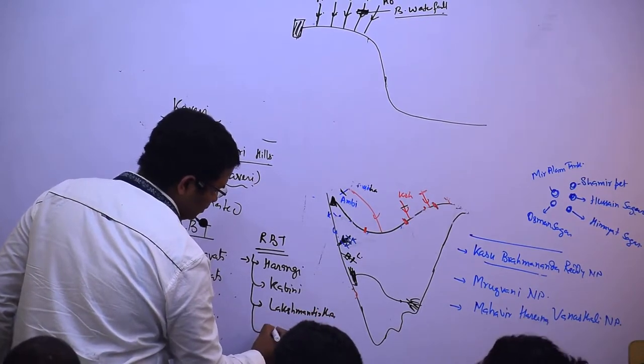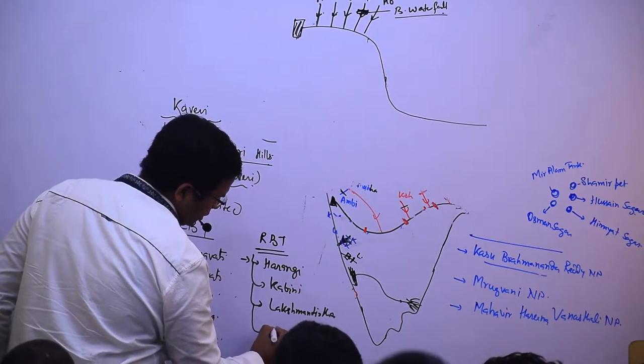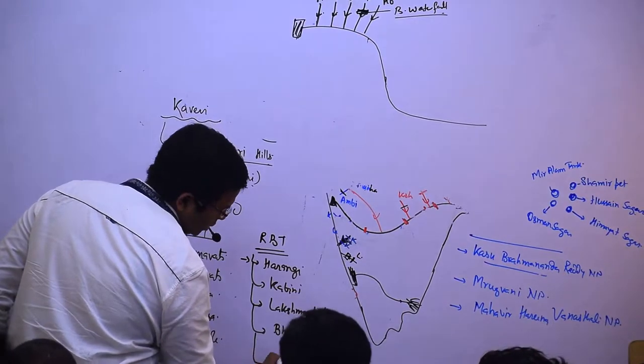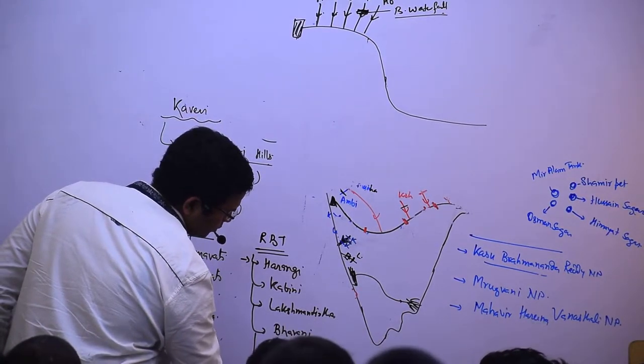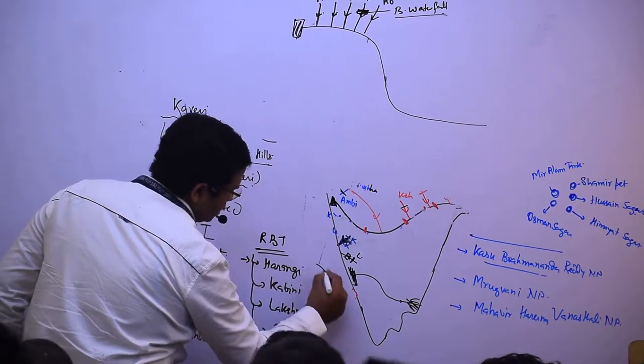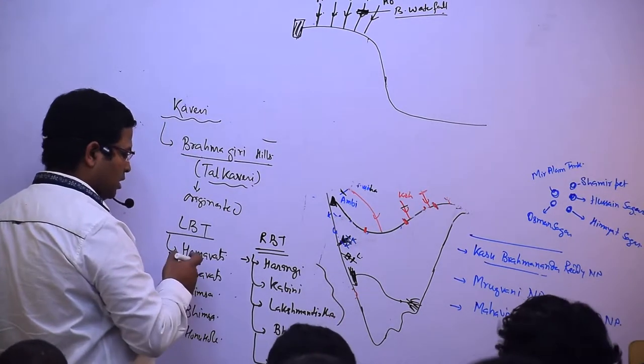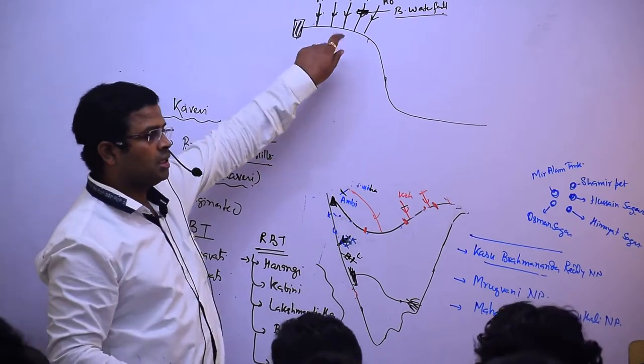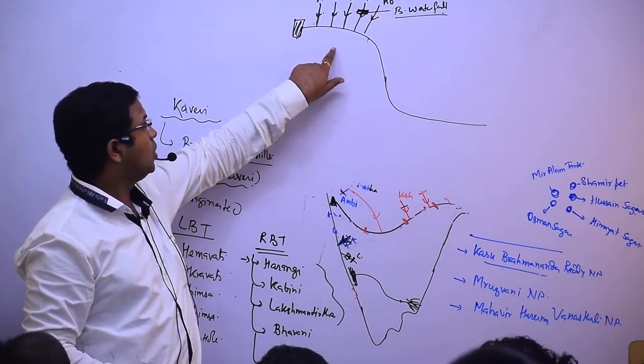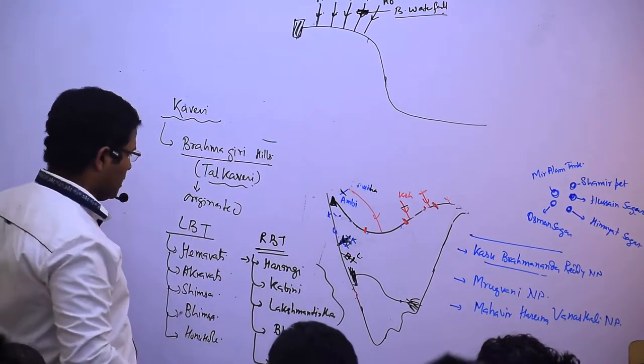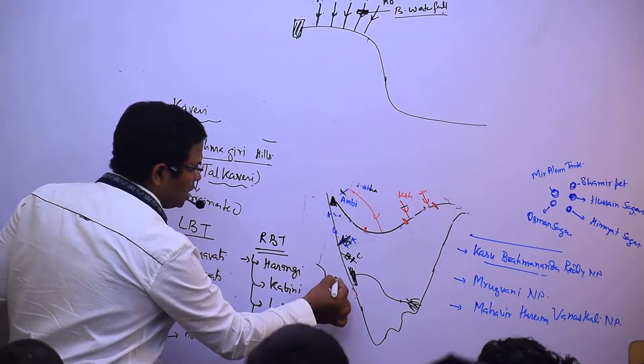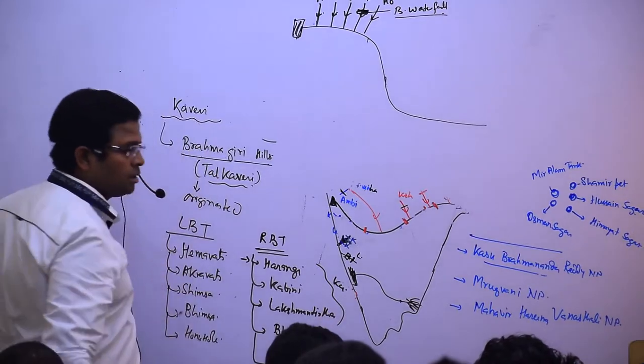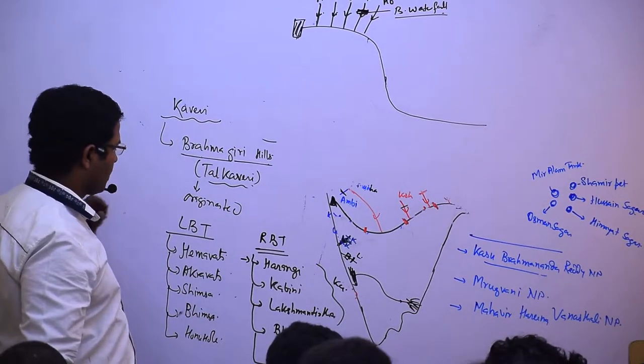Hemavati, Akravati, Simsa, Bhimsa are all in Karnataka. Harangi, Kabini, and Lakshman Tirtha are also in Karnataka, but Bhavani and Amravati are in Tamil Nadu.